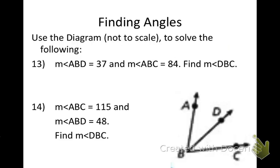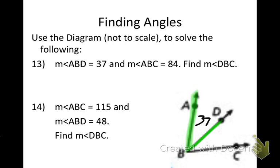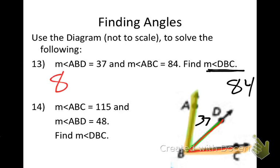Same idea now, but with some smaller angles. We're going to use a diagram — it is not drawn to scale. I know angle ABD is 37 and angle ABC is 84. I want to find the measure of angle DBC. Using those postulates, I subtract 37 from 84 — because I know the whole and one of the parts, I need to find the other part. 84 minus 37 gives me 47 degrees — nice job.